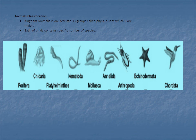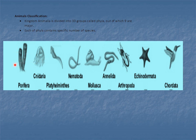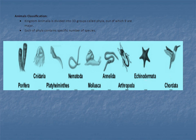Animal classification: Kingdom Animalia is divided into 33 groups called phyla, of which nine are major and are studied in first year. Each phylum contains a specific number of species with peculiar characteristics. The nine major phyla shown in this figure are: Porifera (sponges), Cnidaria (jellyfish), Platyhelminthes (flatworms), Nematoda, Mollusca, Annelida (earthworms), Arthropoda (beetle), Echinodermata (starfish), and Chordata (birds and others).